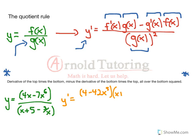times the bottom. That's easy. You just copy (x + 5 - 3/x) minus the derivative of the bottom. Derivative of x is 1. Derivative of 5 is 0. Derivative of -3/x is +3/x^2